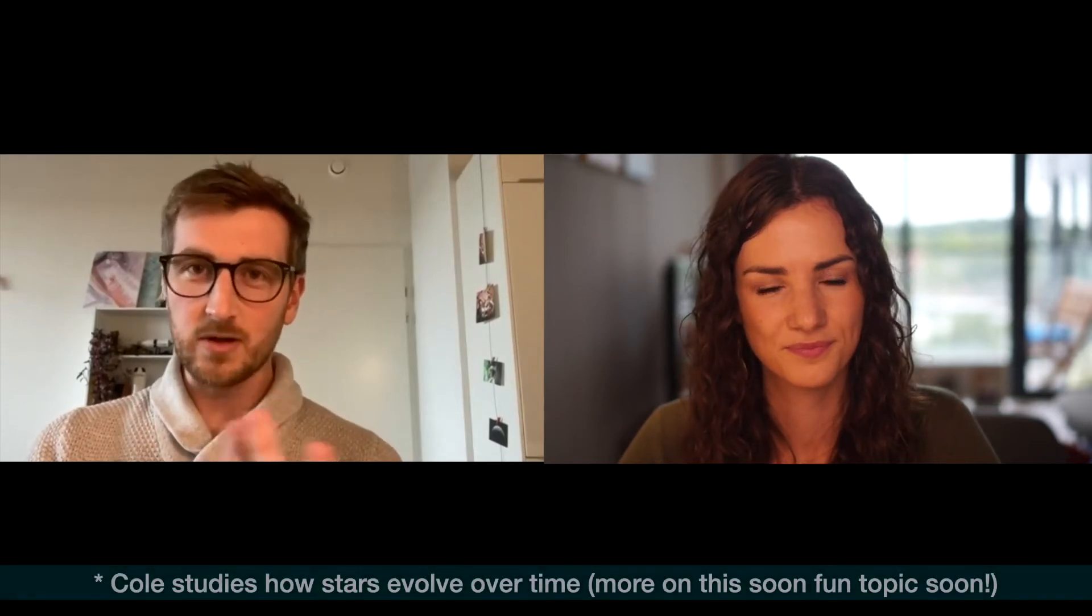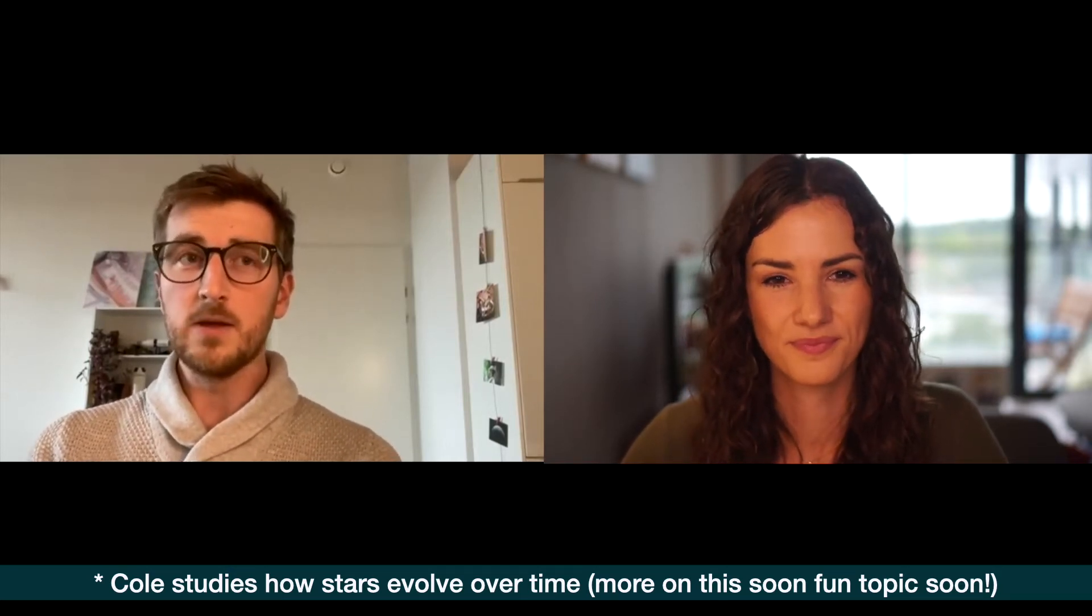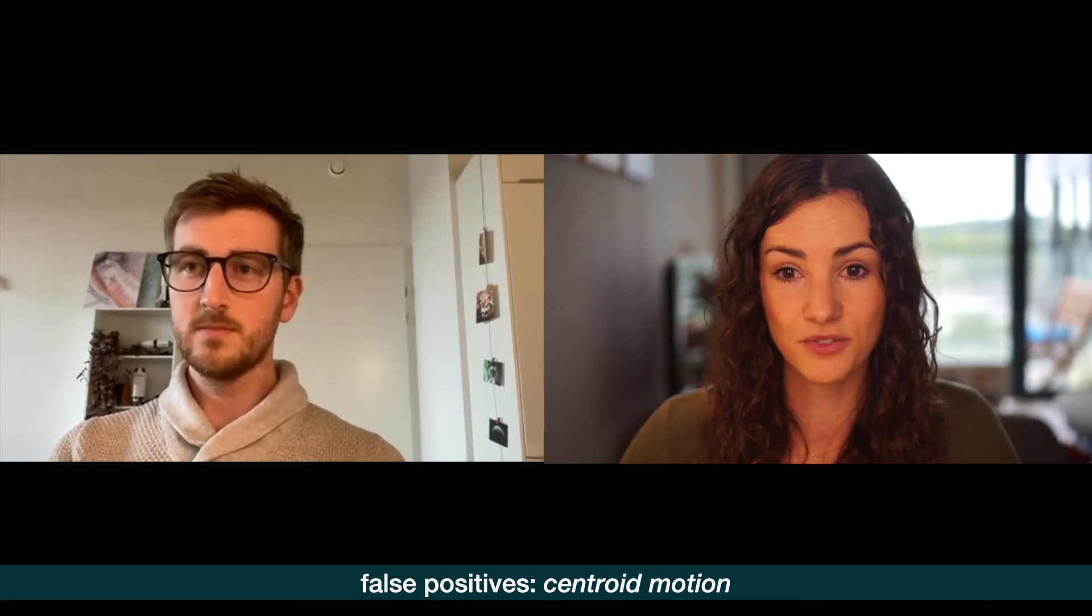So Nora, as I understand it, you have been going on this journey learning how to detect and characterize planetary signals in the test data. You've gone through several vetting tests so far, and we have another one on the menu today, right? So why don't you just take it away and tell us what we're going to be learning about today. Yeah, nice to see you Cole. So we are going to look at another false positive test, and this is the centroid motion test. So another one of those quite important tests. So instead of me just talking about it, let's use some visuals to try and explain what this test is and how it works. I'm just going to share my screen.